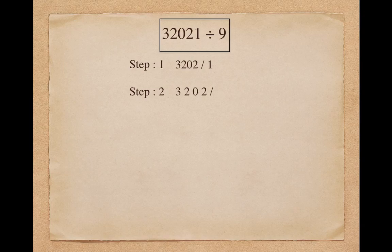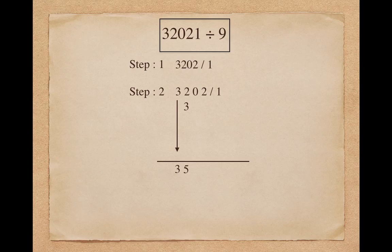One more example. Suppose I want to divide 32021 by 9. As a first step I will have to divide 32021 into 3202 slash 1. To find the first digit of the quotient, I put 3 as it is. To find the second digit, add all the previous digits: 3 plus 2 makes 5. To find the third digit, add all the previous digits: 3 plus 2 plus 0 makes 5. To find the fourth digit, add all the previous digits: 3 plus 2 plus 0 plus 2 makes 7.